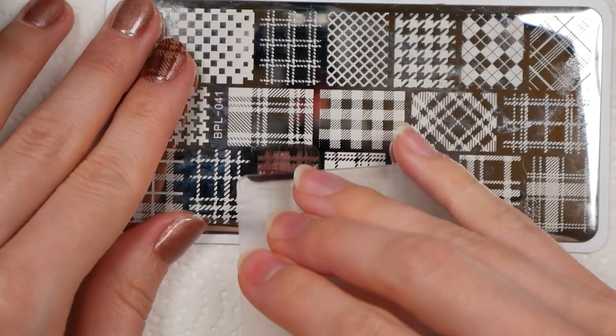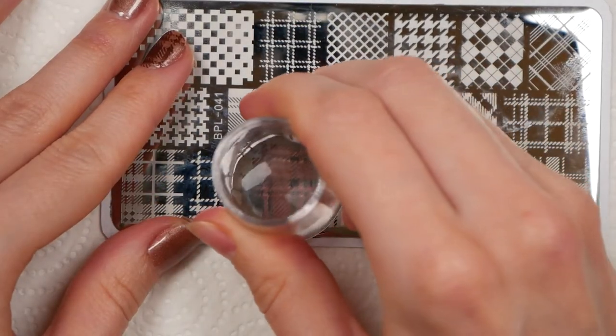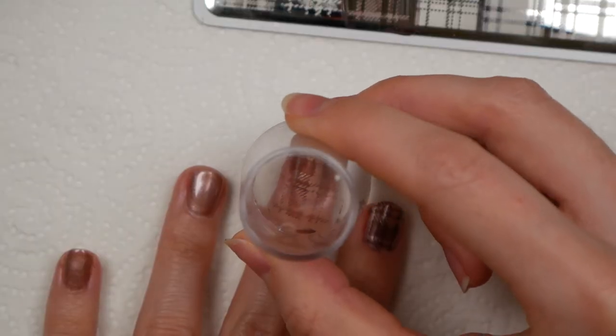After you've cleaned everything, you can move on to the rest of the nails. You'll want to do all this pretty fast because the polish dries quickly when it gets on the stamper.